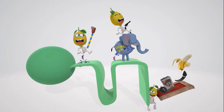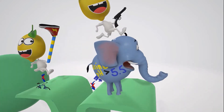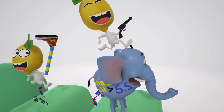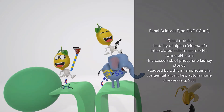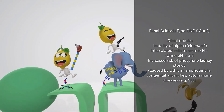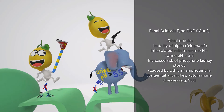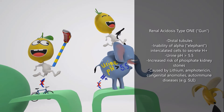Let's start with renal tubular acidosis type 1, represented by this lemon with the gun — the gun reminds us of 1. RTA type 1 takes place at the DCT, and specifically there's an inability of the alpha intercalated cells to secrete hydrogen. The elephant reminds us of alpha intercalated cells, and we see that the hydrogen is stuck because these cells are unable to secrete hydrogen into the tubules.